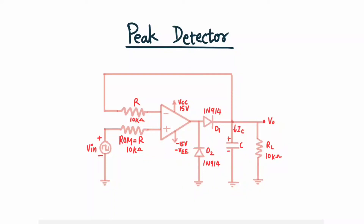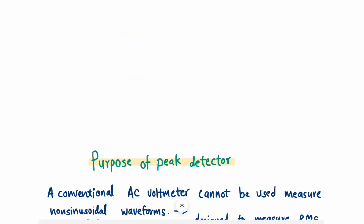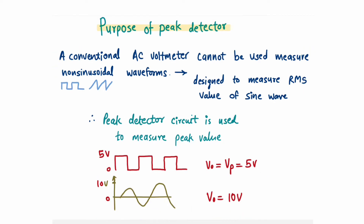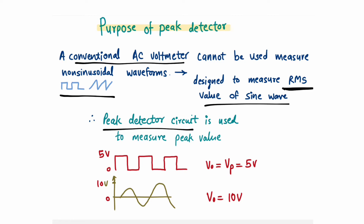Hi everyone, welcome back to my channel. In this video we are going to cover peak detector — positive and negative peak detector. We are going to see the circuit diagram, its working, and waveforms. Let's start with the purpose of peak detector. Why do we need a peak detector? We already have conventional AC voltmeters, but these AC voltmeters cannot measure the peak value of non-sinusoidal waveforms, because they are designed to measure the RMS value of a sine wave.